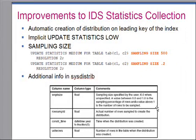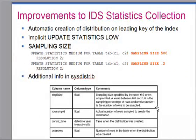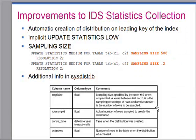In that example, you are giving a sampling size of 500, which specifies that the sampling algorithm should sample a minimum of 500 rows. Previously, IDS calculated the number of rows to sample based on resolution and confidence. Now you can give sampling size as an absolute number. So if the calculation from resolution and confidence results in, say, 300 rows, but you have specified a sampling size of 500, it will sample 500 rows.